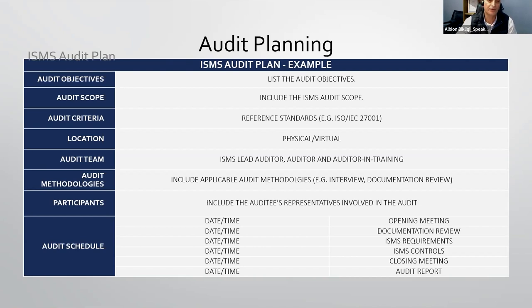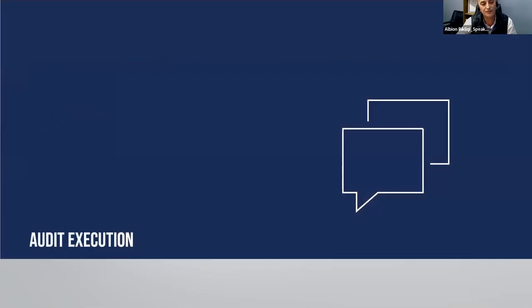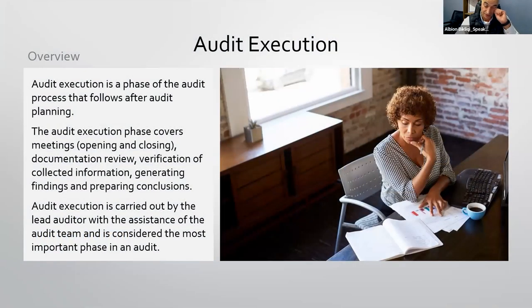Here is an example of an audit plan table: it includes the list of audit objectives, audit scope including the ISMS audit scope reference standards, physical and virtual locations, ISMS lead auditor details, and a schedule covering the opening meeting, documentation review, ISMS requirements review, ISMS controls review, closing meeting, and audit report — with dates coordinated with the auditee.